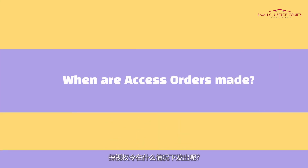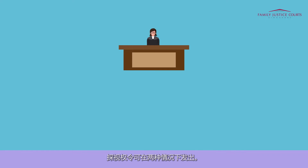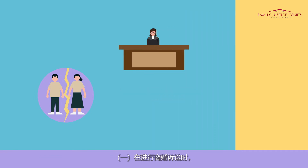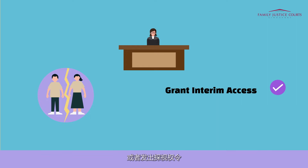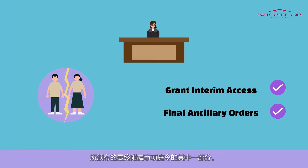When are Access Orders made? Access Orders may be made in one of the following two situations. First, where there are ongoing divorce proceedings. In those proceedings, the court may either grant interim access — meaning the court will make temporary access orders until the completion of the matter — or make access orders as part of the final ancillary orders, when the divorce proceedings are fully completed and finalised by the court.